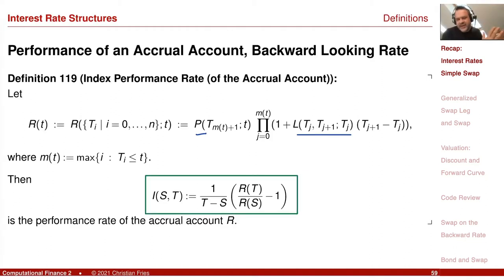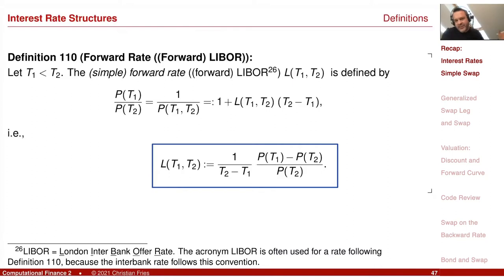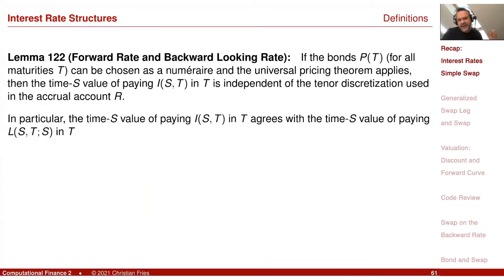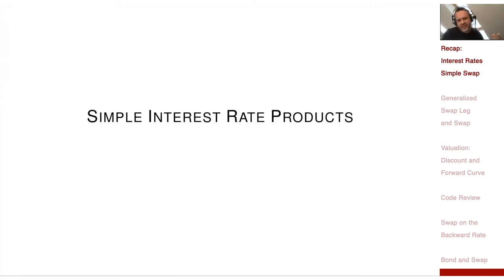The backward rate constitutes the interest that you have realized over the period. The forward rate L is somehow the expectation of the interest you earn — something you can contract in advance for the period. The backward rate is something you have realized by repeated investment. The things are different, but we had this nice lemma that the value of receiving these two different interest rates — the forward rate or the backward rate — agree. So L expresses the market expectation of what you realize by the repeated investments.